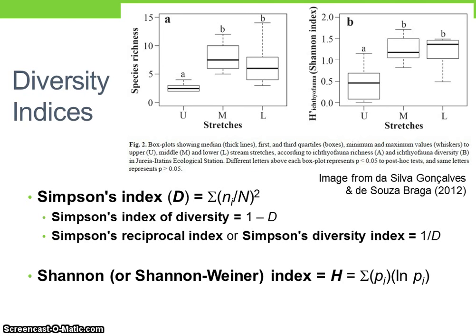Simpson's reciprocal index, which is also known as Simpson's diversity index, is calculated as 1 divided by Simpson's index. The lowest possible value is 1, representing a community containing only one species, and the maximum value is the number of species in the community, which is the species richness.